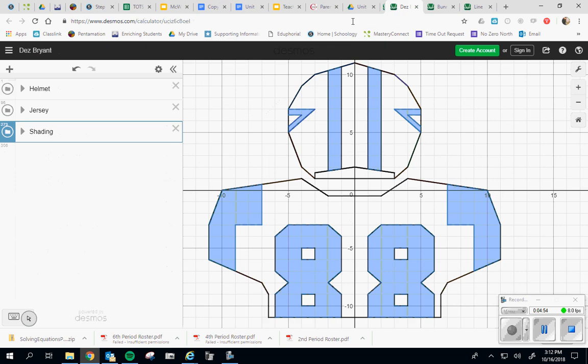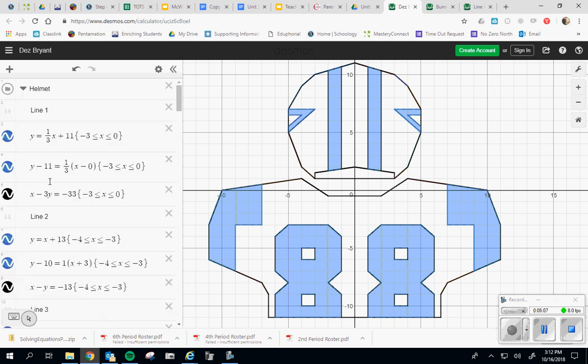Another example: here's Dez Bryant's jersey, may he rest in peace, not really, but from the Cowboys. This is somebody who used folders. So he had a folder for the helmet, a folder for the jersey, and then a folder for all of his shading. So if I open up the helmet folder, I can see, oh again, there's line one with the forms, line two with the forms. Again, y'all did not have to have three, you only have to have two.